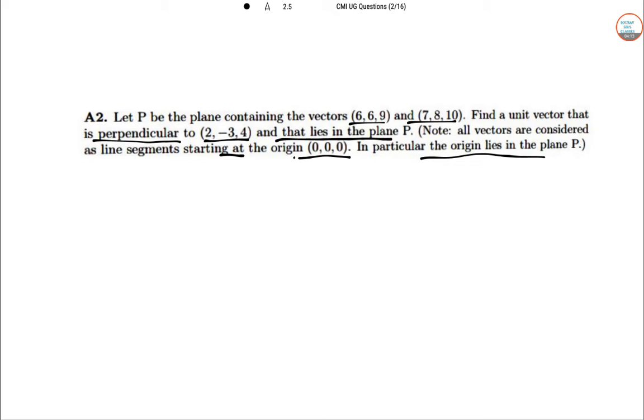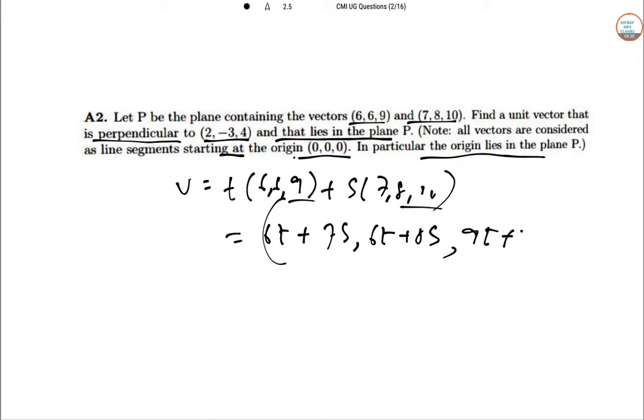So not much. So the desired vector is in the form V, so T into 6, 6, 9, S into 7, 8, 10. So this is 6T plus 7S comma 6T plus 8S and this is 9T plus 10S.